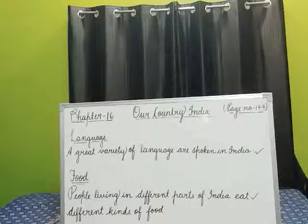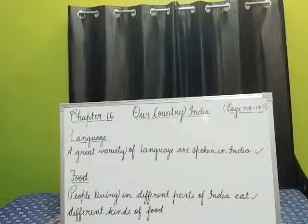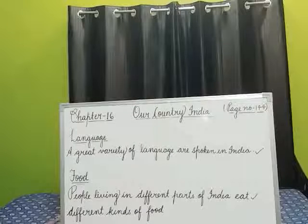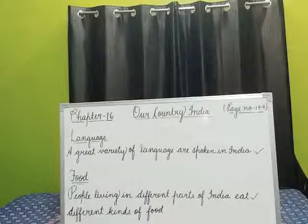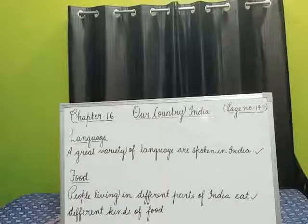As we know, in Rajasthan there is quite scanty rainfall. Only in some areas is water provided through canals, and there agriculture is possible. Mainly in Rajasthan, people grow maize, jowar, bajra, and wheat also. Rice is the staple food of people of South India and North East India.